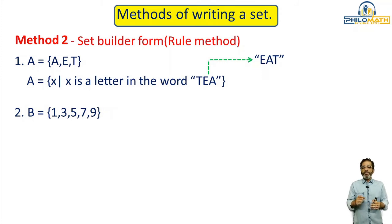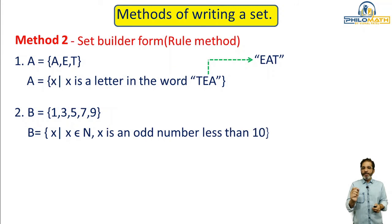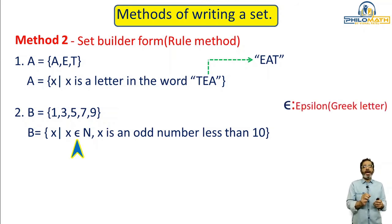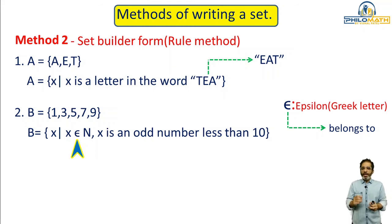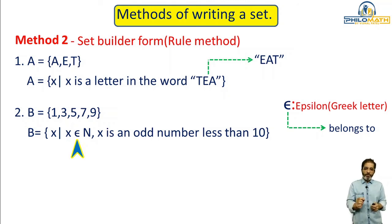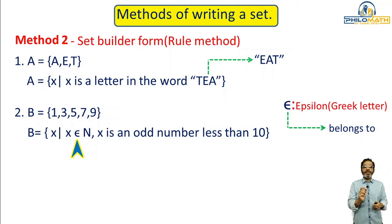Let us take one more example: B = {1, 3, 5, 7, 9}. These are odd numbers. In set builder form, we write B = {x | x ∈ N, x is odd and x < 10}. The symbol that looks like 'e' is actually the Greek letter epsilon (∈), which means 'belongs to.' Capital N is always used to denote natural numbers. We specify that x belongs to natural numbers and is an odd number less than 10.